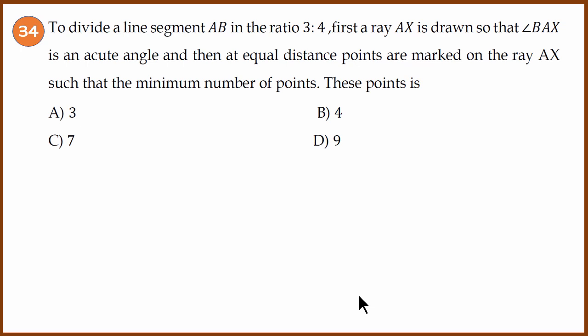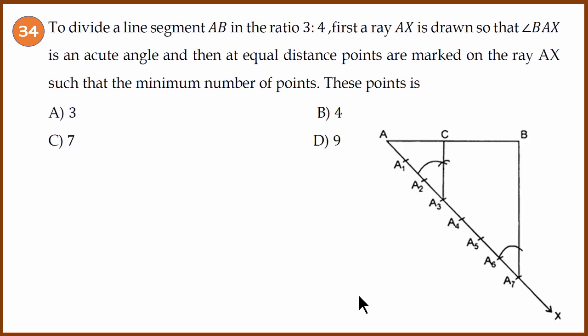Question 34 is a construction question. We need to divide line segment AB in the ratio 3:4. We draw a ray AX such that angle BAX is an acute angle, then mark points at equal distances on ray AX. The minimum number of points needed is always 3 + 4 = 7 points. Therefore, the answer is 7.